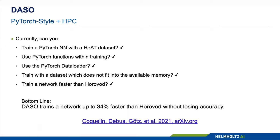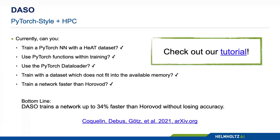In summary for neural networks: can you train a PyTorch neural network with a HEAT dataset? Yes. Can you use PyTorch functions within training? Yes, which speeds things up quite a bit. Can you use the PyTorch DataLoader? Yes. Most importantly, you can train with a dataset that does not fit into a single node's memory — you don't need to load the whole dataset first before distributing. And we can train a network faster than Horovod. Check out the paper on arXiv and the tutorial on our GitHub page.